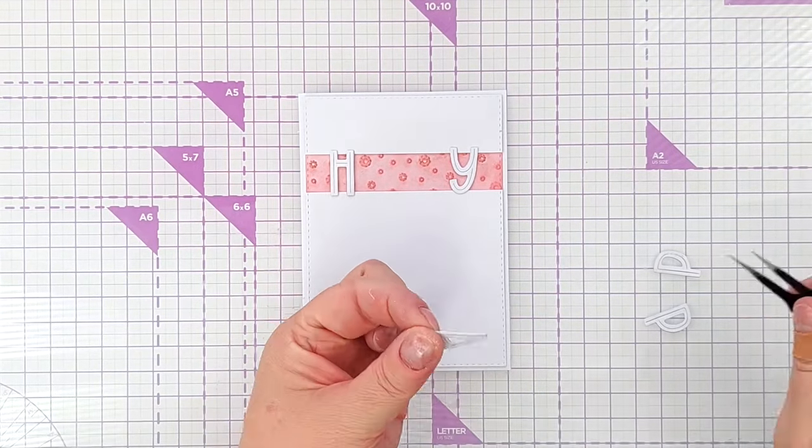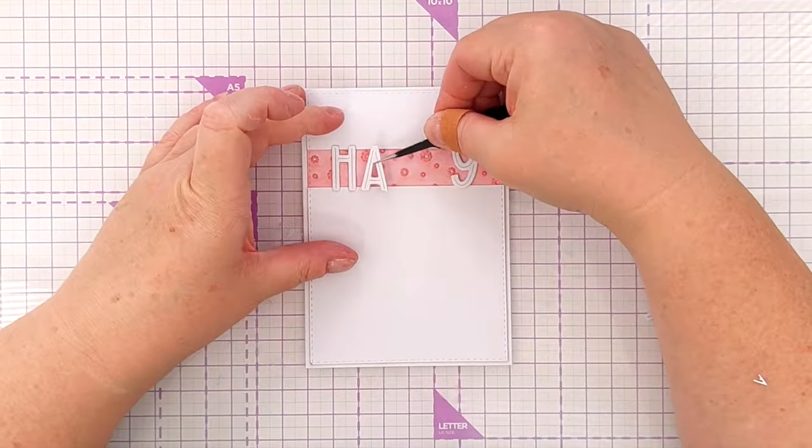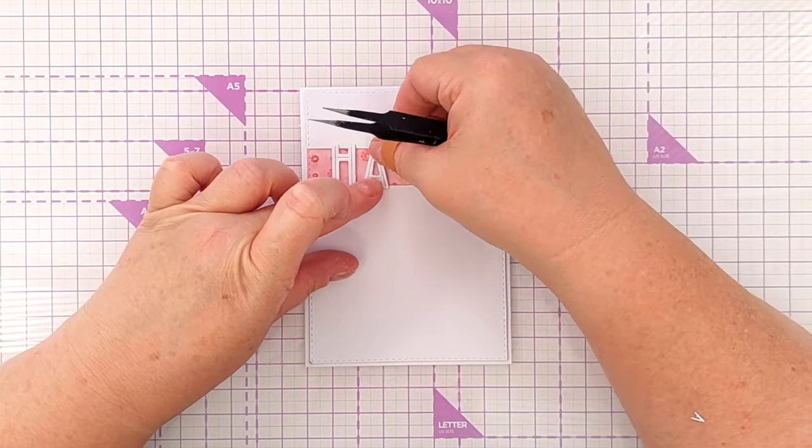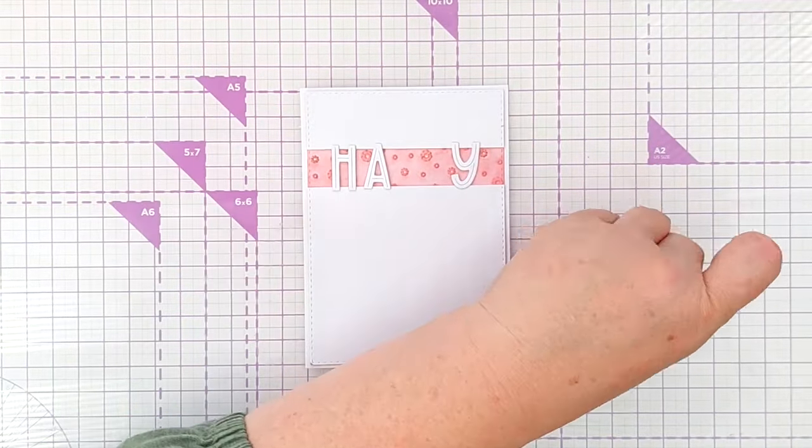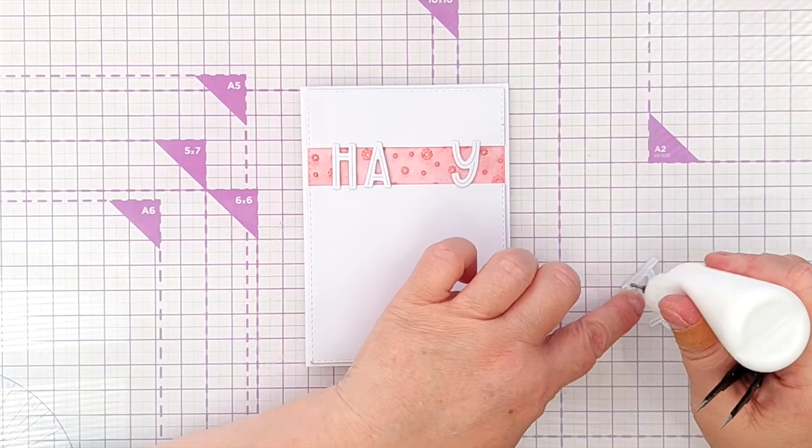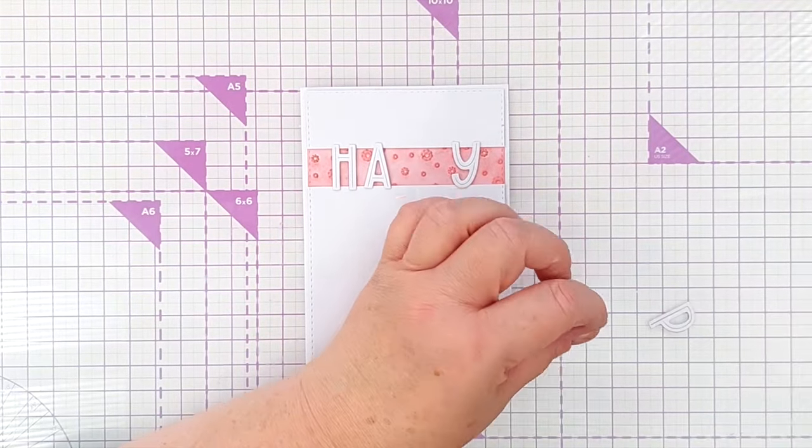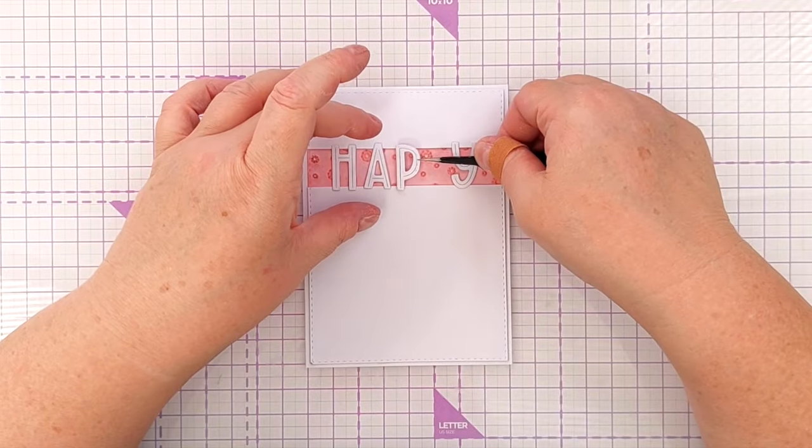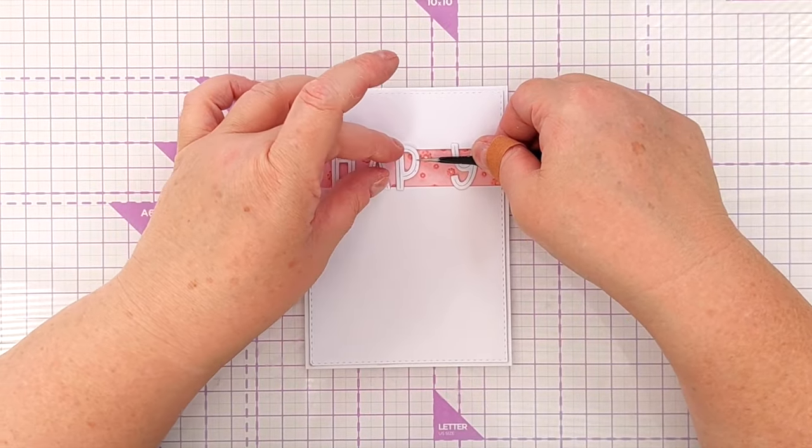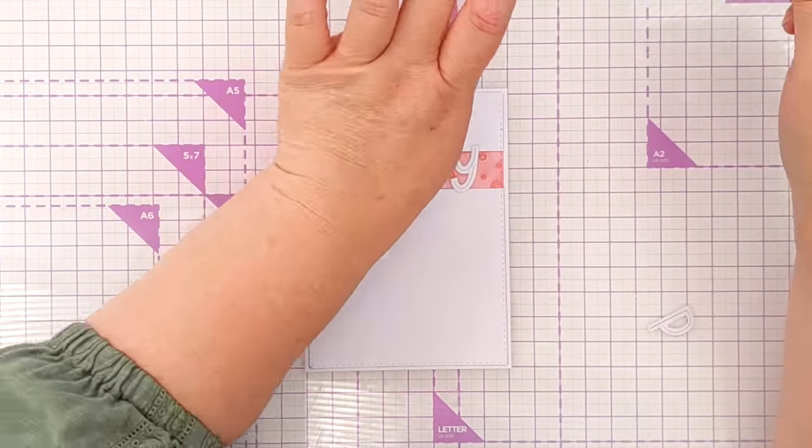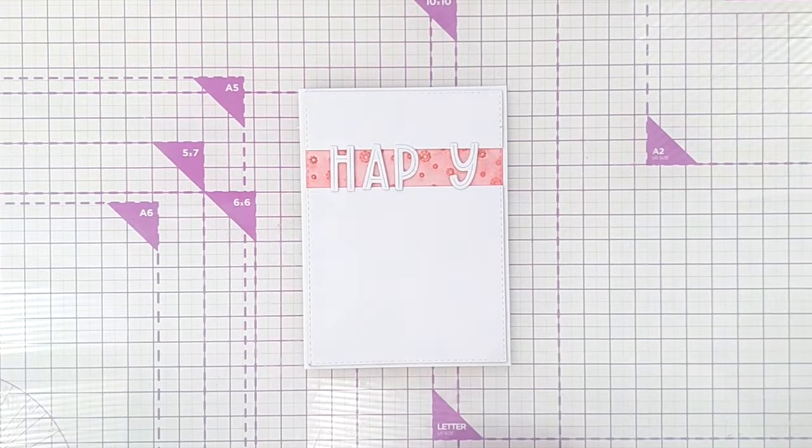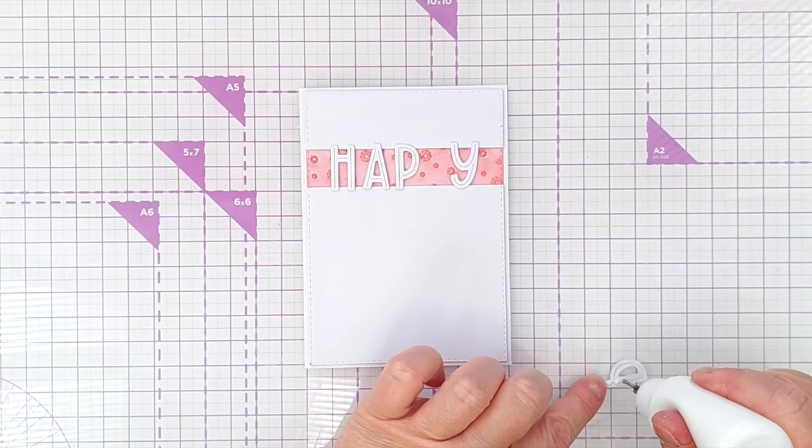If you want a bit more dimension on this card you could put some craft foam in between the two panel layers. That would look quite effective, but I'm being really aware at the moment of increasing postage costs and thicker cards in the UK at least are more expensive to post, so I'm trying to keep my cards as thin as possible.